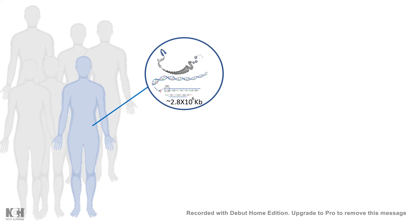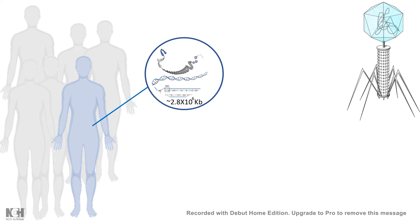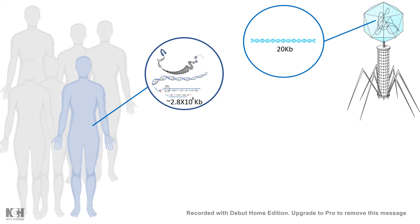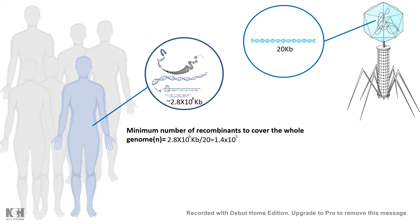The human genome is approximately 2.8 × 10^6 kb pairs. To appreciate how difficult cloning it would be: if we restriction-digest the whole genome and clone it inside a bacteriophage with an insert size of 20 kb, to cover the whole genome we would need at least 2.8 × 10^6 kb divided by 20, which is approximately 1.4 × 10^5 fragments. At minimum, that many recombinants would need to be screened.